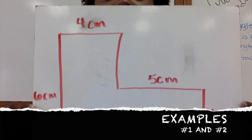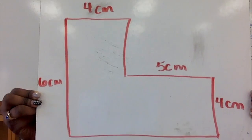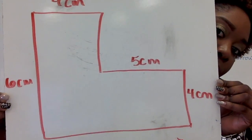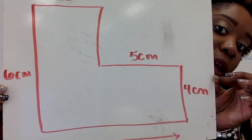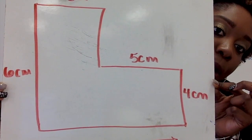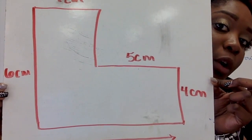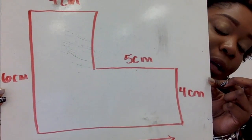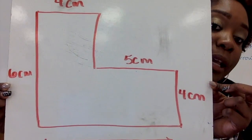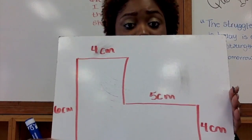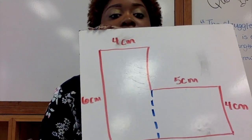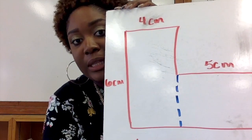This is the first composite figure problem. It might be a good idea to pause the video to get the problem down before we move forward. When you look at this figure, you might not know how to find its area — but take the figure and break it down. When I look at it, I see two rectangles. Let me show you how I break this down.